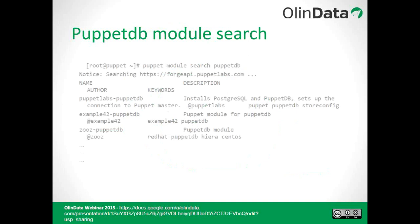Here I have shown how the PuppetDB module can be searched. You simply give the command 'puppet module search puppetdb', which will show you a big list of PuppetDB modules available from different authors. Let me show you the same thing on the Forge module. Here you can see it is searching forge.api.puppetlabs.com.